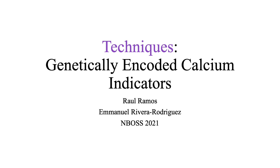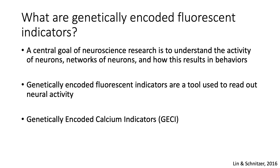This week's video is dedicated to introducing students to genetically encoded calcium indicators. A central goal of neuroscience research is to understand the activity of neurons, networks of neurons, and how their activity results in behaviors. To this end, genetically encoded fluorescence indicators are a tool used to read out neural activity. There are many different types of sensors that read out different signals, but in today's video, we will focus exclusively on genetically encoded calcium indicators. We will talk about how these work and their advantages and disadvantages.